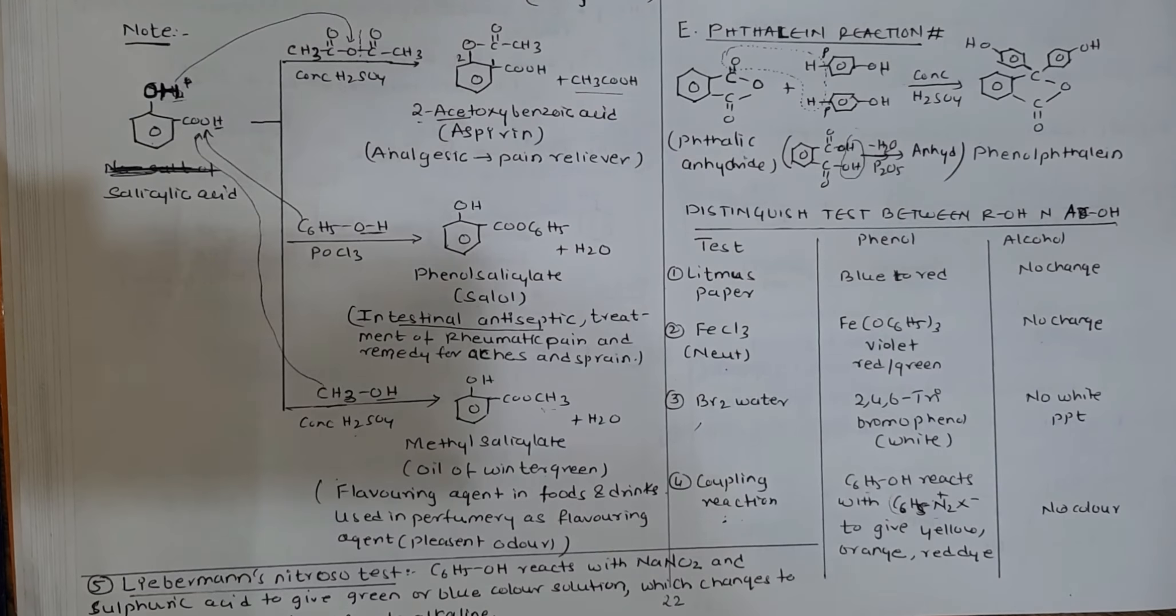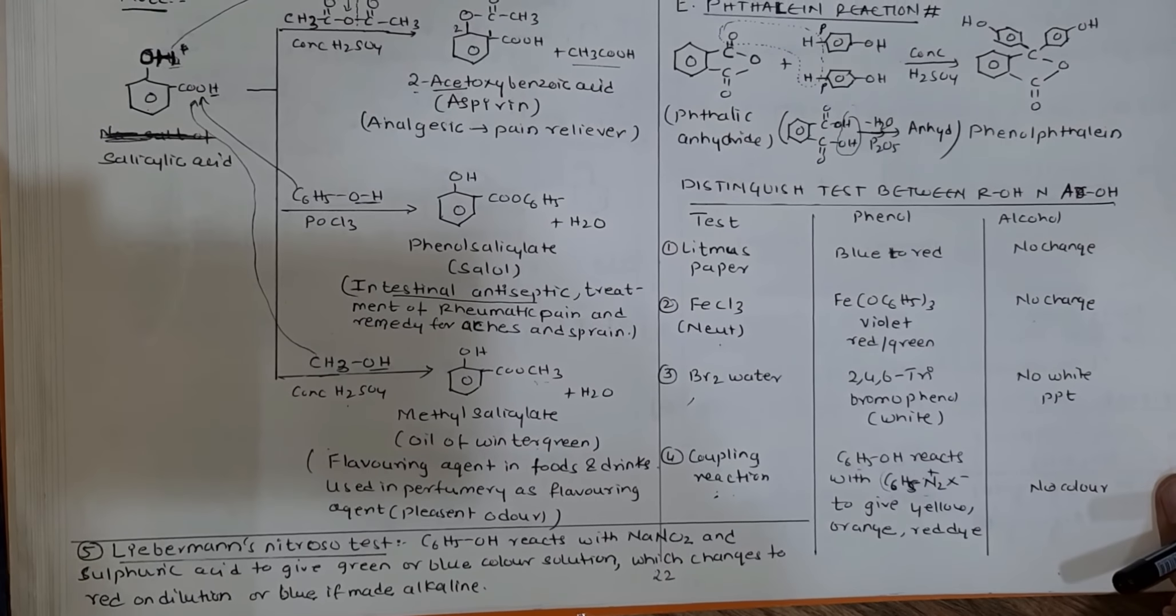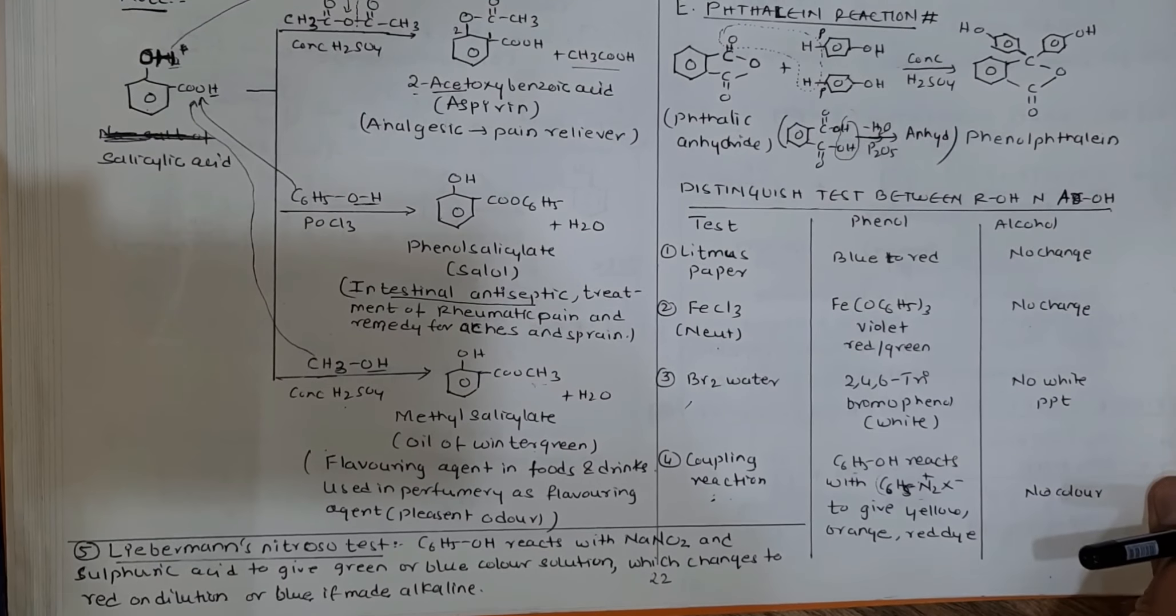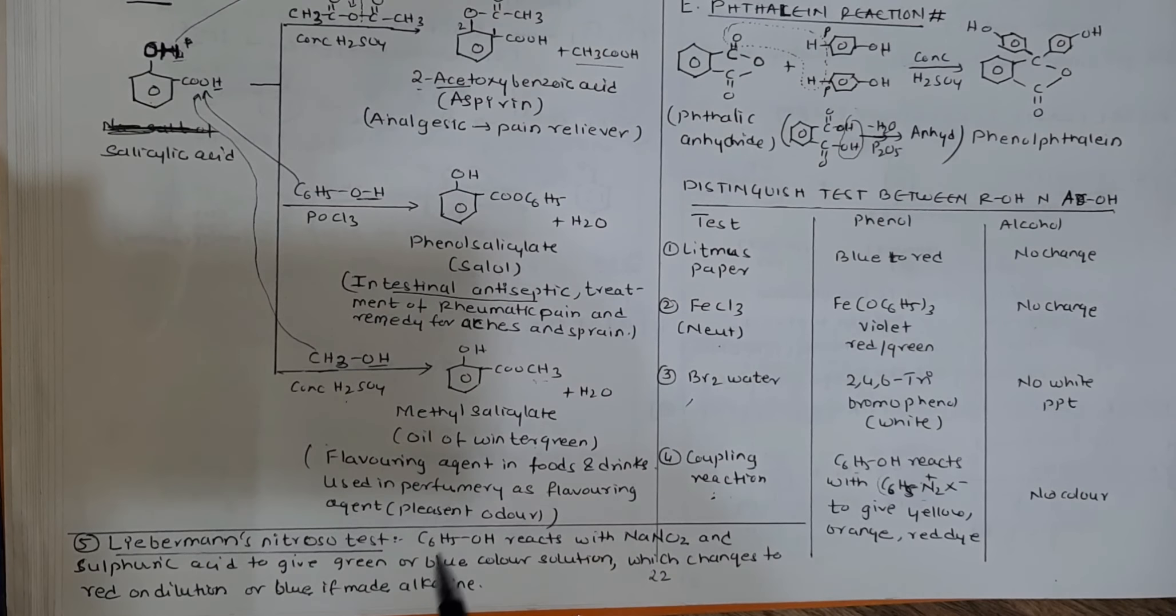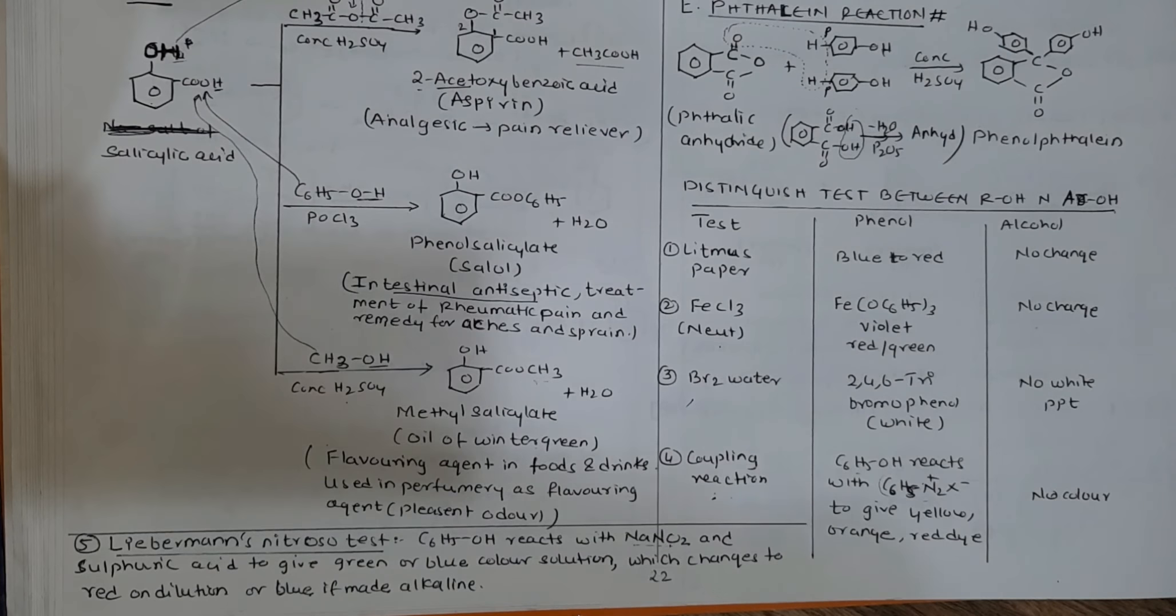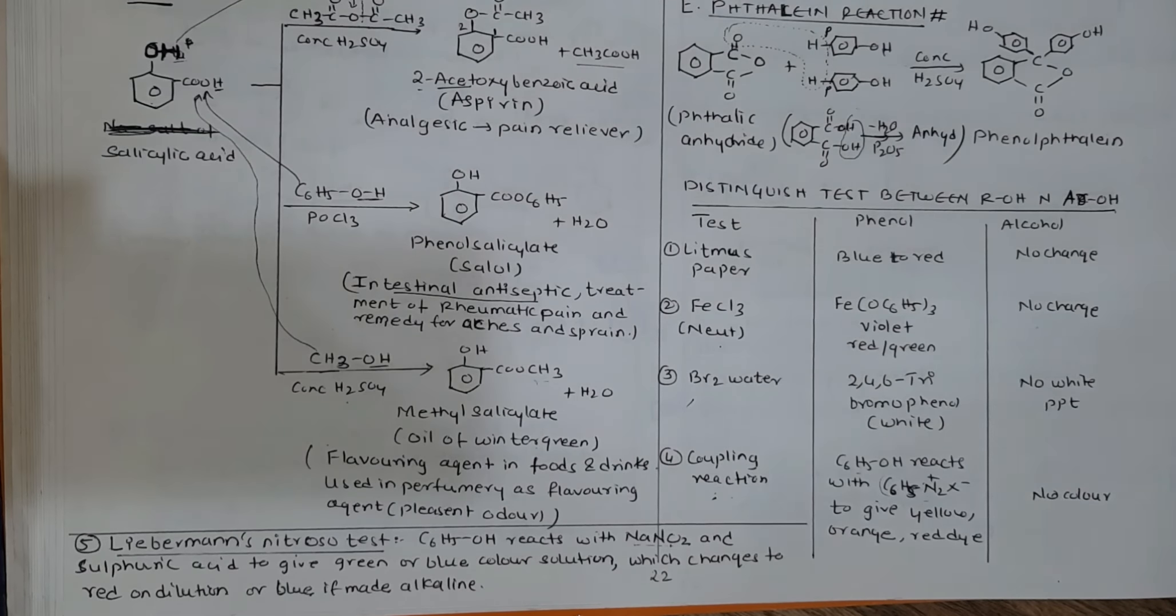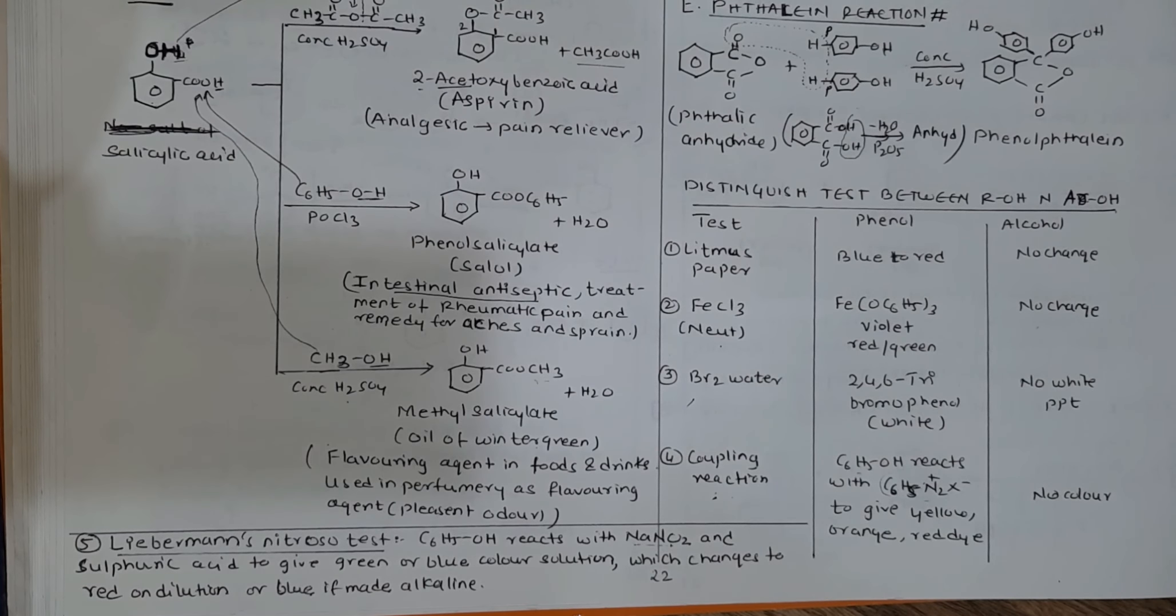Phenol loses H, forming a yellow, orange, or red dye. Alcohol does not give this reaction. Liebermann's nitroso test: C6H5OH phenol reacts with sodium nitrite and sulfuric acid to give a green or blue color. This solution changes to red on dilution.